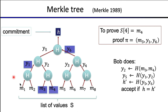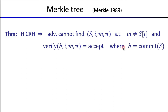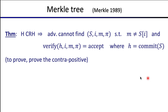You can prove a security theorem showing this scheme is secure. In particular, if H is a collision resistant hash, it's fairly easy to prove that an adversary cannot find a list S, an index i, a candidate m, and a proof pi such that m is not the ith element and yet the verification procedure accepts m as if it were. This is a good exercise — try to prove the contrapositive: if Alice could find such a four-tuple, she would be able to break collision resistance of H.